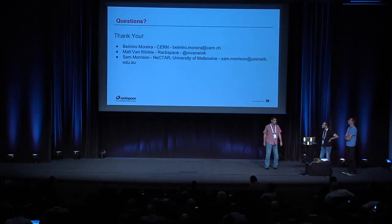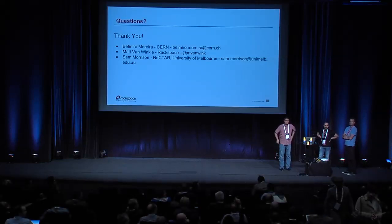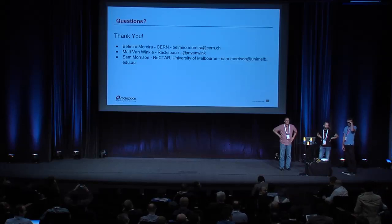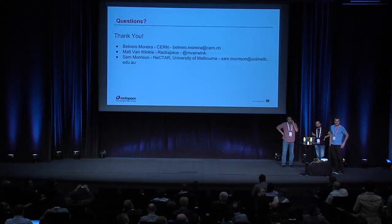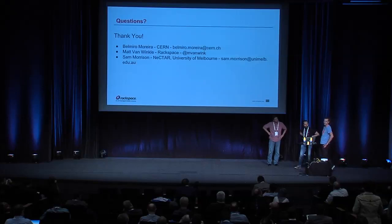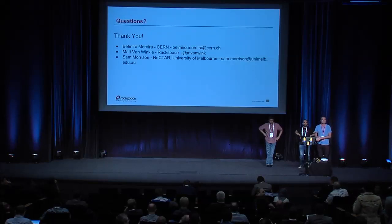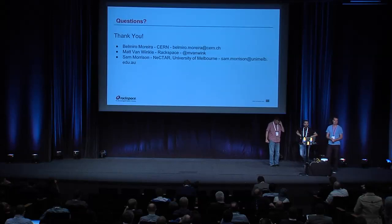We have time for questions. A question for the first speaker: you said about 1,000 hypervisors with 40,000 cores — does that mean 40 cores per hypervisor? Yeah, it probably works out to that. We have some hypervisors that have about 64 cores and some that have 24, but on average it works out to about 40. We've got some brand new gear that's 40-core processors and some AMD hardware with 64 cores per hypervisor — yes, in production.